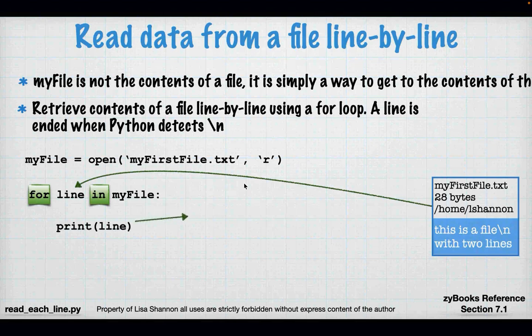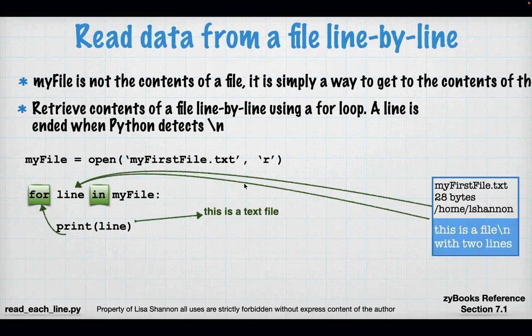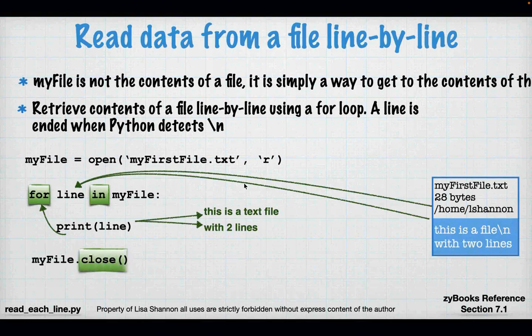So every time somebody has written out a line in a file and hit the enter key, that's going to be another line that comes in from this particular for loop. So I'm going to have print line, and I'm going to print this is a text file. And then it's going to go back up to the top of the loop, get the second line, and print this is a text file. These are very simple examples, but they represent how you have to do file handling. File handling is very important — and remember to close a file.